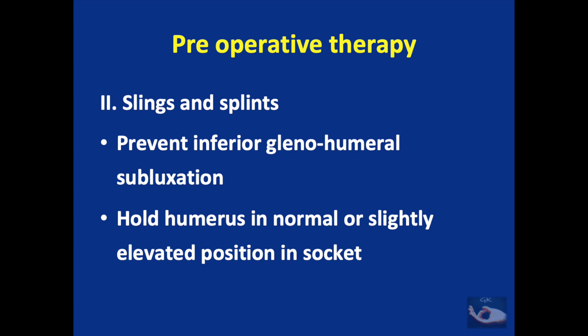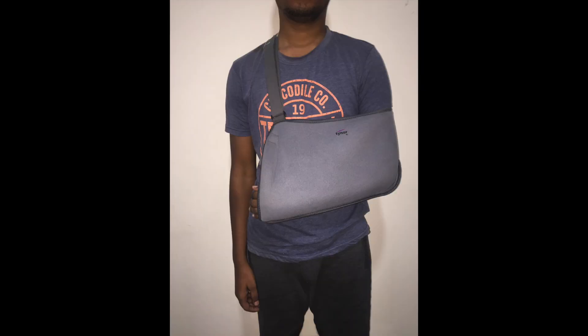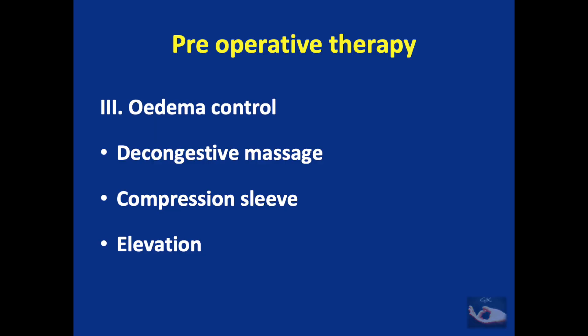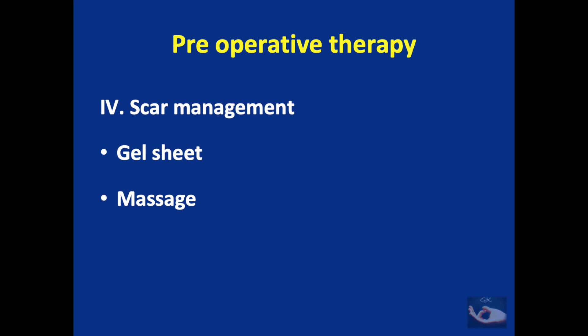The next part of pre-operative therapy consists of slings and necessary splints. Slings are necessary to prevent inferior glenohumeral subluxation and help hold the humerus in normal or slightly elevated position within the socket. Slings should be monitored properly, as appropriate splints must also be applied to keep the hand and fingers in a desirable position — for instance, avoiding keeping the metacarpophalangeal joints of the fingers in extension, which is not desirable. Edema control is achieved with decongestive massage, compression sleeve, and elevation. Scar management is dealt with by the therapist using ultrasound and scar massage, augmented with gel sheeting.